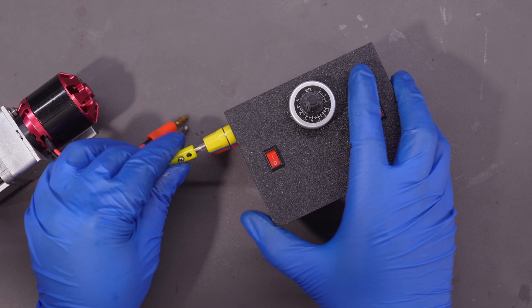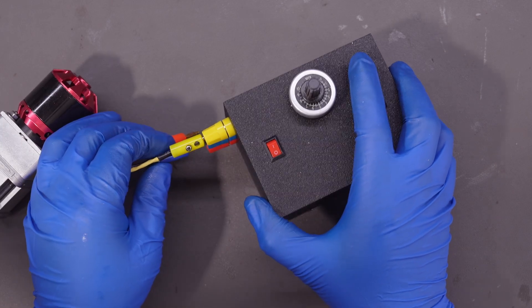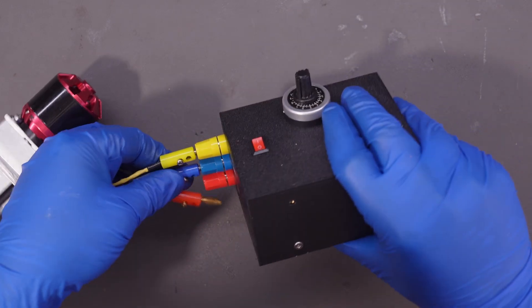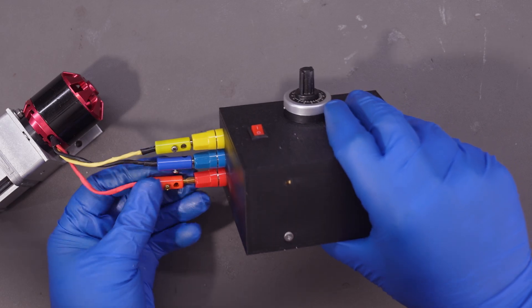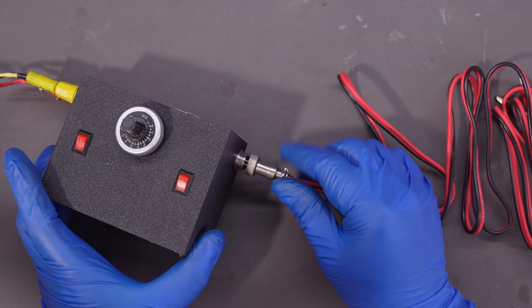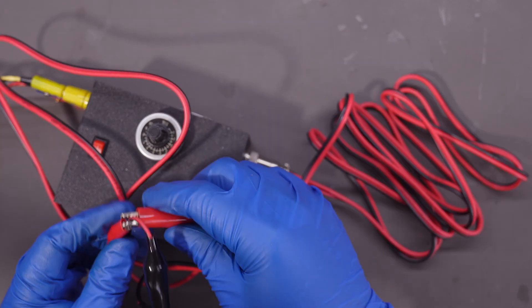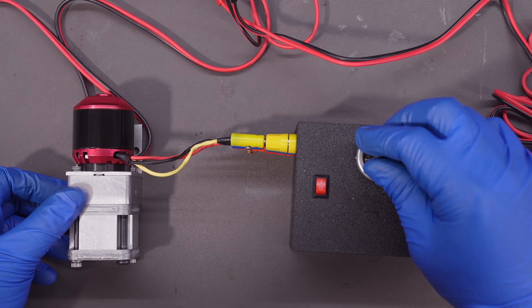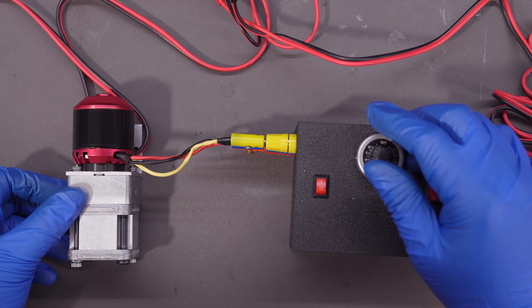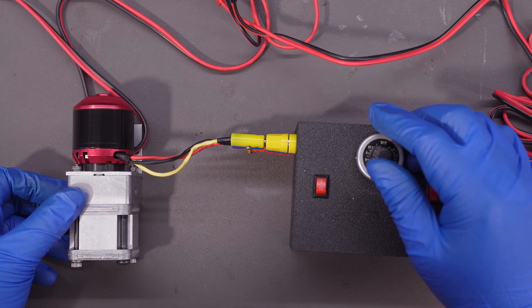Let's power it on and test it. To save some trouble, I'm not using a remote control or ESC for this test. I'm using this brushless motor driver, which I built for another project. The black knob in the middle is a potentiometer, which I used to adjust the brushless motor's speed.